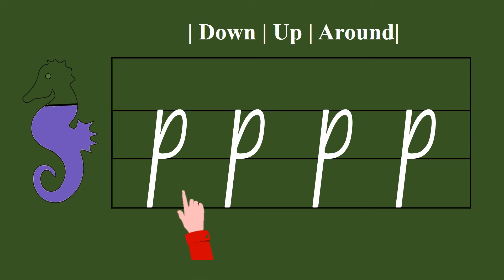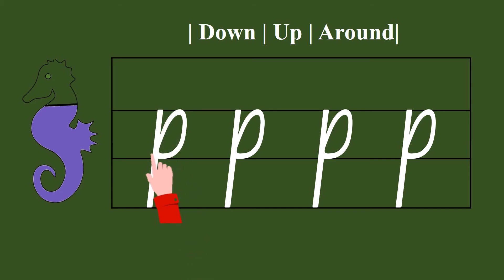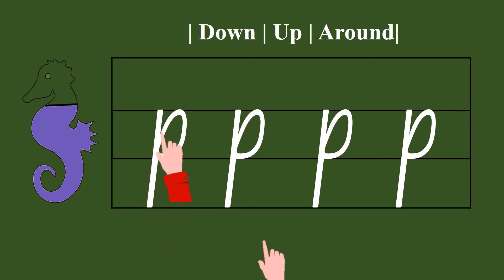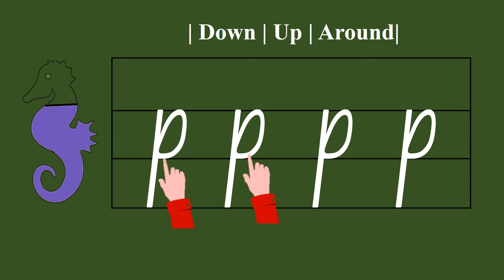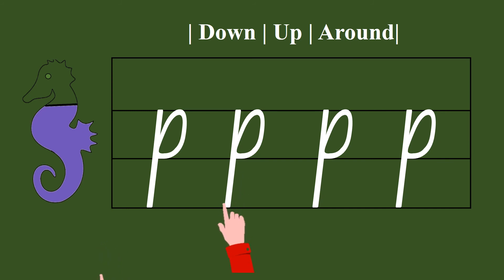Now let's write letter P with the language. Down, up, around. Let's write one more time. Down, up, around.